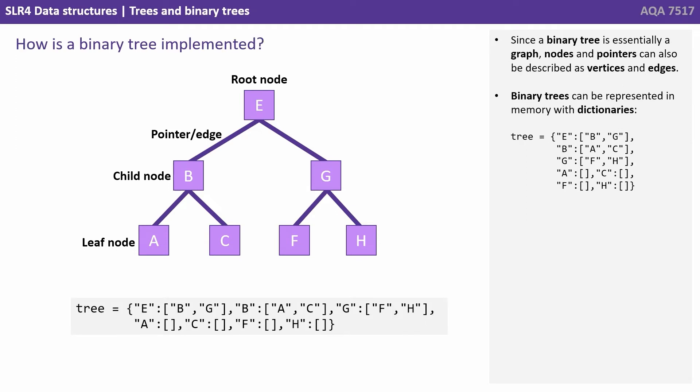Since a binary tree is essentially a graph, nodes and pointers can also be described as vertices and edges. Binary trees can be represented in memory with dictionaries as shown here.